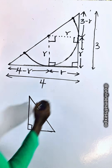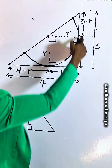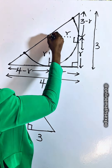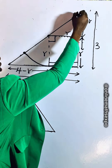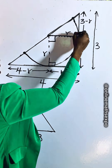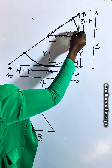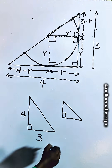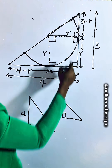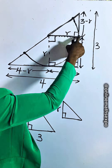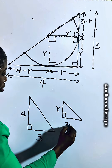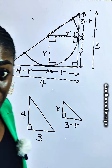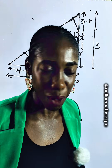This is the big right triangle: this side is 4 units, and from here to here is 3 units. We also have the smaller triangle. If here is 90 degrees, here will also be 90 degrees. From here to here is R, and from here to here is 3 minus R.